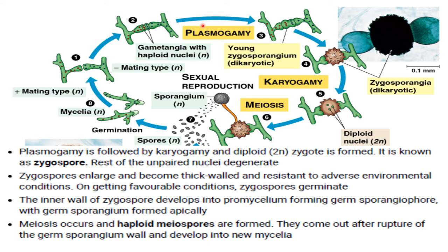The gametangia conjugate to form a multinucleated structure. Plasmogamy is followed by karyogamy, forming a diploid zygote known as a zygospore; the rest of the unpaired nuclei degenerate. The zygospore enlarges and becomes thick-walled, resistant to harsh environmental conditions. On favorable conditions, the zygospore germinates: the inner wall develops into pro-mycelium forming a germ sporangiophore with a germ sporangium at the apex. Meiosis occurs and haploid microspores are formed, which come out after rupture of the germ sporangium wall and develop into a new mycelium.